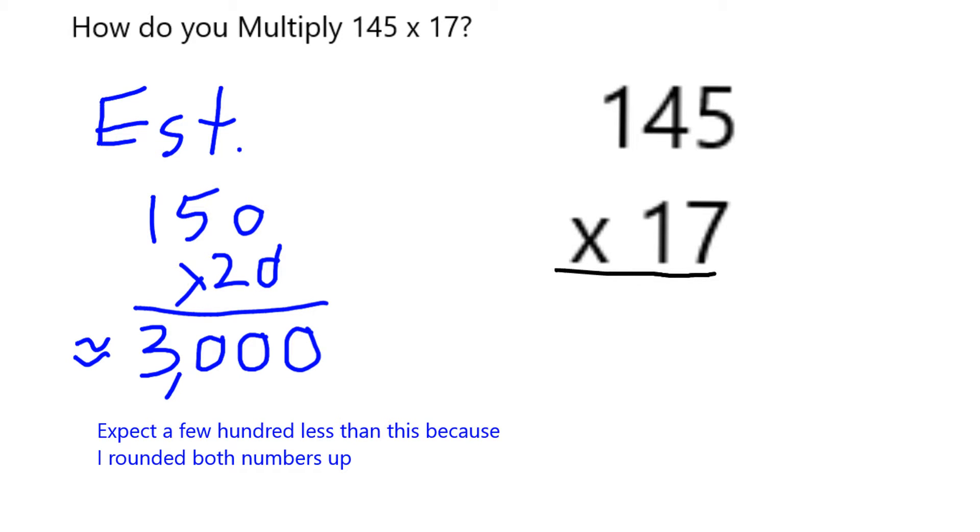Now I can proceed by multiplying. 7 times 5 is 35. Put the 5 down here and the 3 up here. 4 times 7 is 28. I'm going to add my 3, which is 31. So 1 here and a 3 up here.